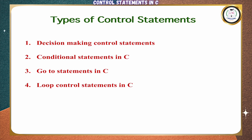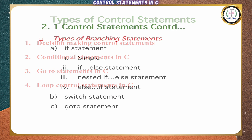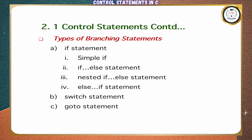Types of control statements: first, decision-making control statements; conditional statements in C; go-to statements in C; and loop control statements in C. Types of branching statements: we have if statement, switch statement, and go-to statement.